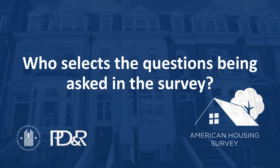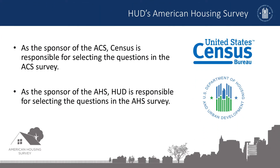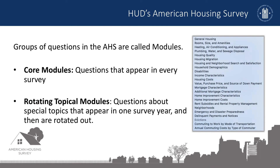Now, let's examine who selects the questions asked in each survey. Since the ACS is sponsored by Census, they are responsible for selecting the questions in the survey. Generally speaking, the ACS questions change very little between surveys. Census is responsible for determining how much the questions in the survey will change. As the sponsor of the AHS, HUD is responsible for selecting the questions in this survey. Groups of questions in the AHS are called modules, and there are two types: core modules are questions that appear each time the AHS is conducted, and rotating topical modules are questions about special topics that appear in one survey year, and then are rotated out, perhaps to reappear four or six years later.